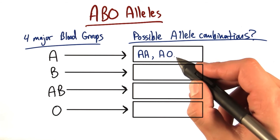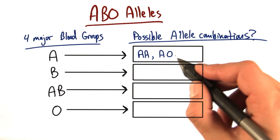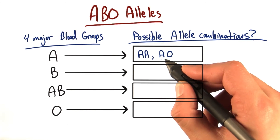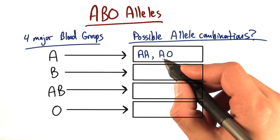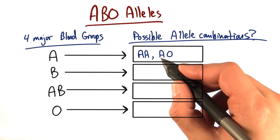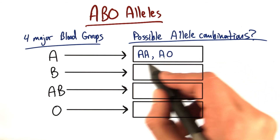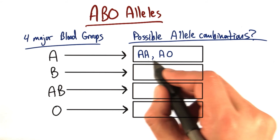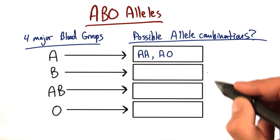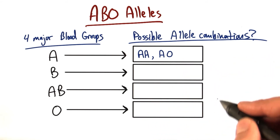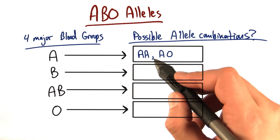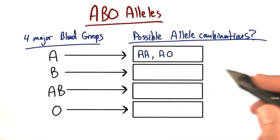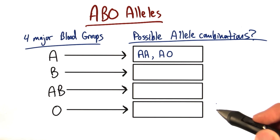Because the O allele wouldn't produce anything — we get nothing. But the A allele would put the A antigen, or the A carbohydrate, on the surface of our red blood cells, because the A allele codes for the ABO protein that will make and put the A carbohydrate on the surface of red blood cells. So these are the only two possible allele combinations we could have. I want you to fill that in for the other three options and come up with the correct allelic combinations. Separate each combination with a comma, and remember that the order of the alleles doesn't matter.